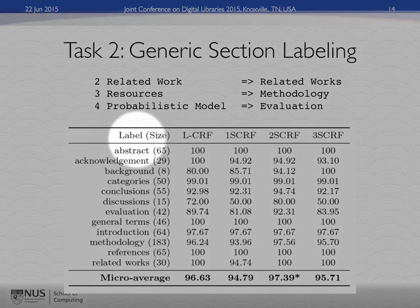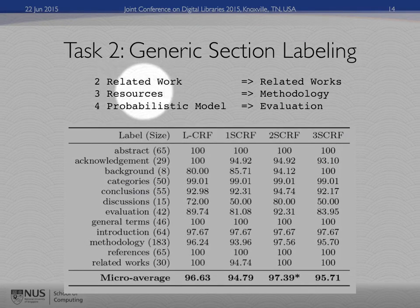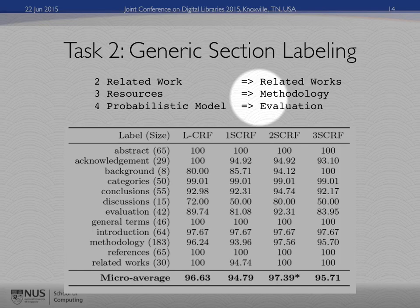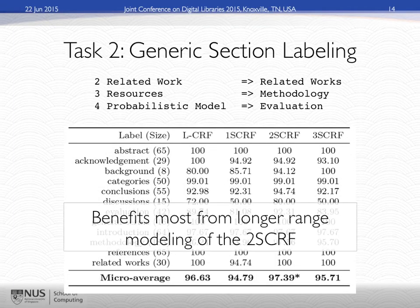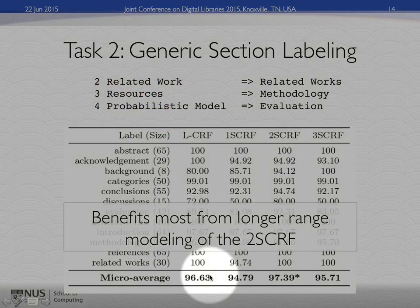For generic section labeling, you have pre-identified section headers in a scholarly paper — one called 'related work,' one called 'resources' — and we want to categorize them to generic sections like evaluation or methodology. This is helpful if you want to pull out evaluation sections from several papers to create a survey of which technique does what. This particular task benefited the most from longer-range modeling of the second-order CRF — modeling not just adjacent dependencies but one additional. You can see quite a big jump of one percentage point, which is very significant given we're dealing with errors of only about 2–3%.